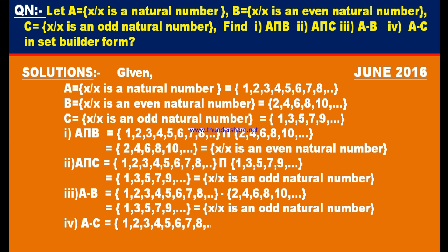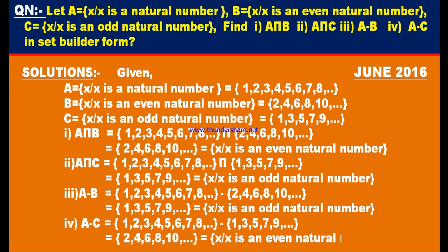Fourth bit: A minus C. A = {1, 2, 3, 4, 5, 6, 7, 8, ...} minus C = {1, 3, 5, 7, 9, ...}. The elements left in the first set only are 2, 4, 6, 8, 10, and so on. These are even numbers, so in set builder form, A minus C = {x | x is an even natural number}.